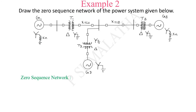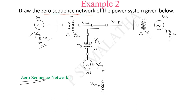Second problem: they have asked to represent only the zero sequence network of the given power system. No need to worry — it is very simple. You need to represent only three equivalent circuit representations: one for generator, one for transformer, and one for transmission line. If you know these three equivalent representations and the conditions for drawing the zero sequence network for transformers, any kind of network can be drawn without any problem. Drawing the ground line common, the generator has XG1 zero sequence component and 3XN value.